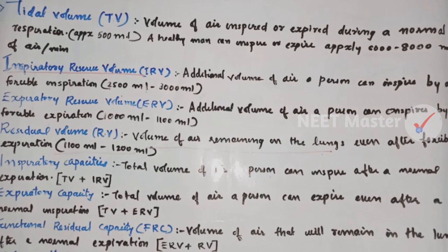Inspiratory reserve volume, IRV, is the additional volume of air a person can inspire by a forcible inspiration. When the force is applied during expiration, the expiratory reserve volume is the volume of air expired. The expiratory reserve volume is 1000 to 1100 ml.